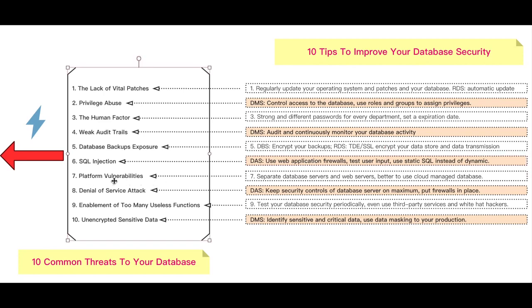Next: platform vulnerabilities. Platform vulnerabilities can also bring damage to your database. Generally a web server is more likely to be attacked since it's publicly accessible. If a web server is compromised and the database server runs on the same machine, the attacker would have access as the root user to your database and data. Separating database servers and web servers can keep your data secure even if the web server has already been compromised. It's better to use a cloud managed database such as RDS rather than building a database server yourself.